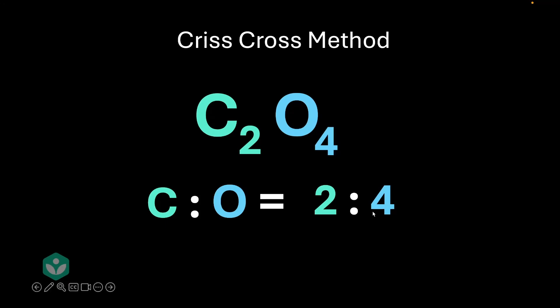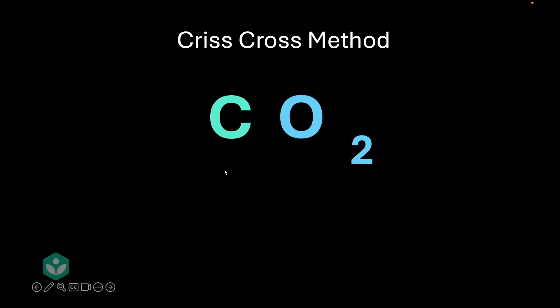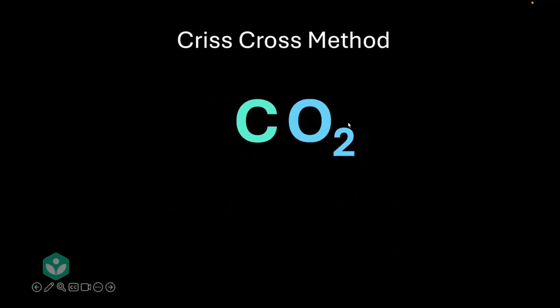2 goes into 4 twice, and so we get 1 ratio 2. But if we did that cancellation here, we can do the cancellation here as well, and we'd get C1O2. But since this 1 is kind of useless, we go ahead and write it as CO2. So, that actually means that every molecule of CO2 has one carbon atom and two oxygen atoms. Amazing.